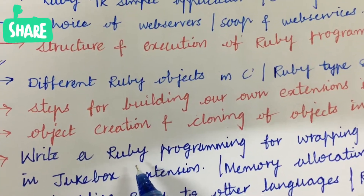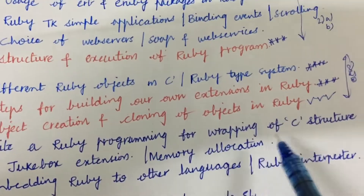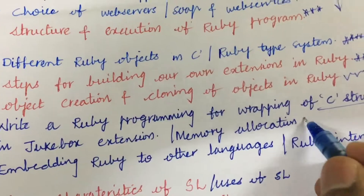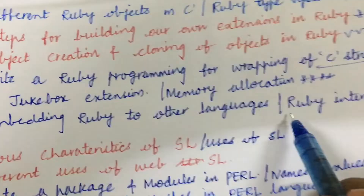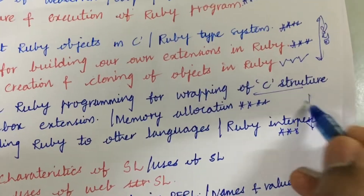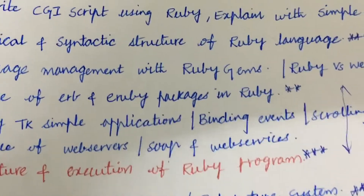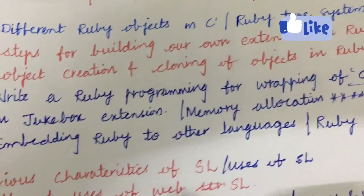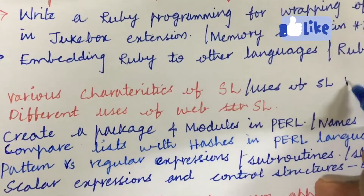Please do carry your pencils and pens to the examination. Write a Ruby program for wrapping of C structures — this is one of the gunshot questions, covering jukebox extension or memory allocation, and may be the fourth question (4a). Later, embedding Ruby into other languages as well as the Ruby interpreter — explain these in detail. From these concepts we can expect 4a as well as 4b. Unit 1 covers 30 marks and Unit 2 covers 30 marks, for a total of 60 marks covered so far.